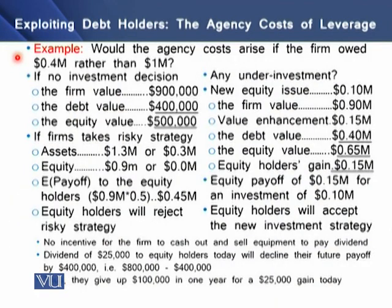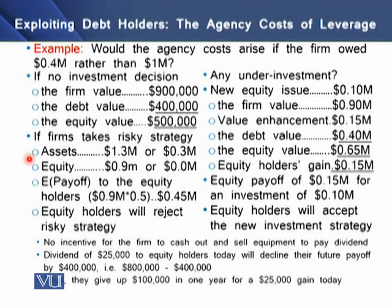We have an example: would agency costs arise if the firm owed $0.4 million rather than $1 million to its debt holders? With no investment decision, the firm's assets would be worth $900,000, the debt value is $400,000, and the remaining $500,000 accrues to equity holders. If the firm takes a risky strategy, assets will be worth $1.3 million or $0.3 million. After paying the $400,000 debt, equity will be worth $0.9 million or $0.0 million, giving an expected payoff to equity holders of $0.45 million. Equity holders will reject this risky strategy as it reduces their expected payoff.